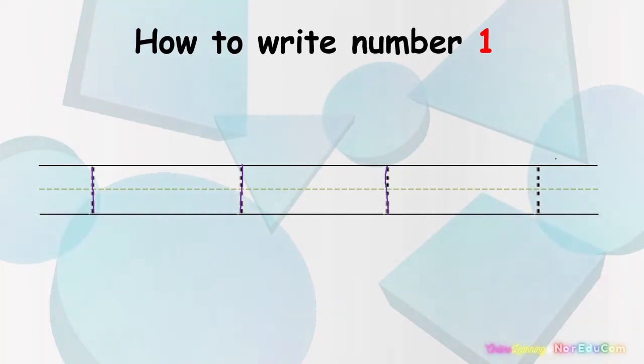Let's write it again. We start at the top and do the straight line down. Number 1. We start at the top and do the straight line down.